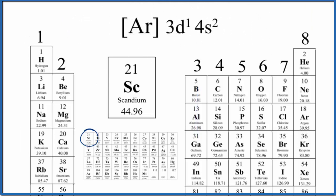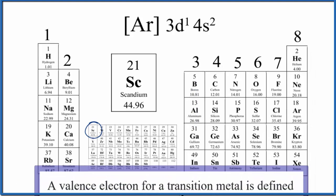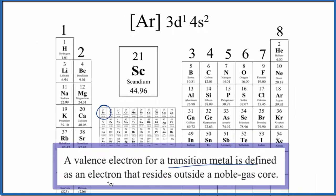For transition metals, one definition of the valence electrons for transition metals says that their valence electrons are the electrons that reside outside the noble gas core. This is the noble gas core.